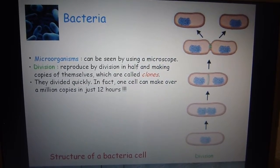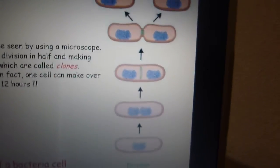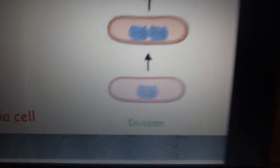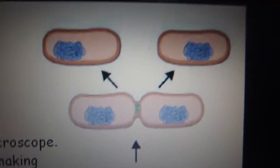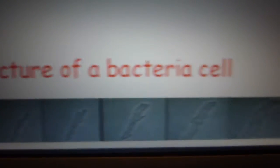Bacteria, microorganisms can be seen using a microscope. They reproduce by division, making copies of themselves which are called clones. They divide quickly. In fact one cell can make over a million copies in just 12 hours.